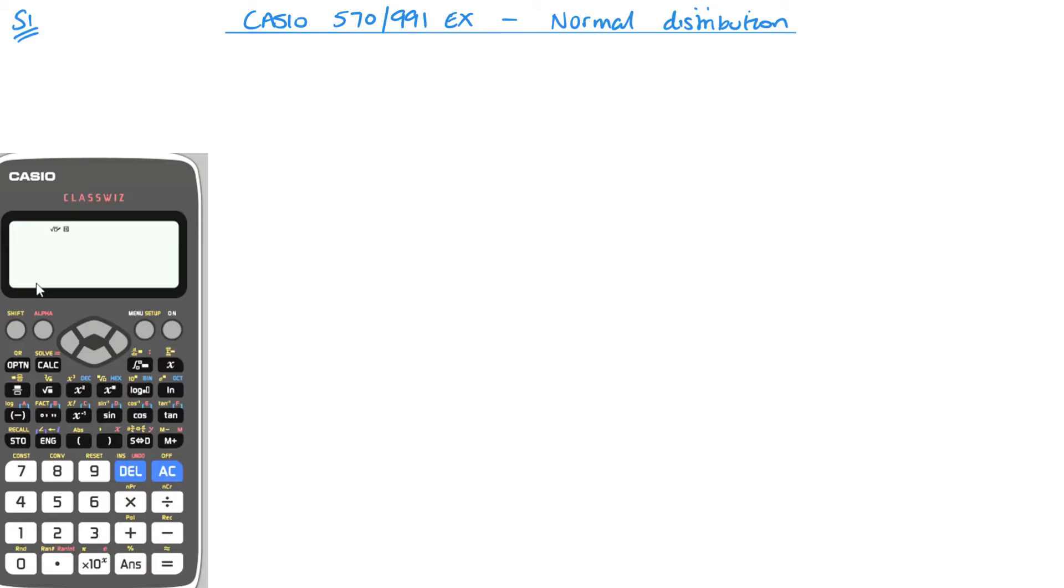Welcome to S1. Today we're going to look at using our Casio 570 991 EX with normal distribution. You do need the English language version. There is an Arabic language version for those here in the Middle East, but it doesn't have normal distribution, so you need the English version.